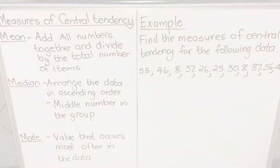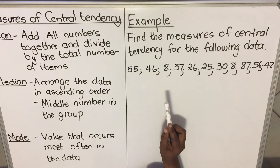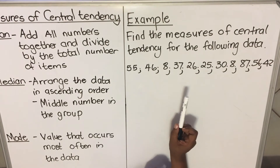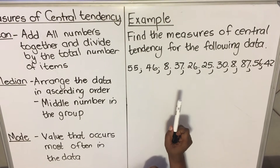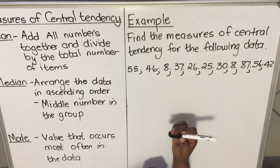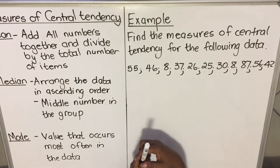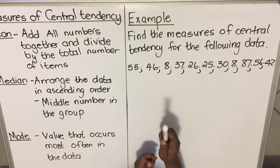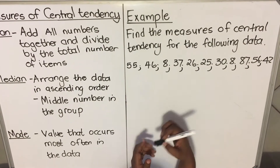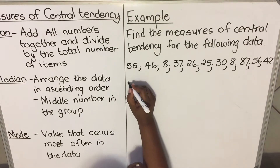Let's look at an example. They say find the measure of central tendency. If an example asks you that, they're asking you to find the mean, the median, and the mode. So we're going to start with the first one — the mean. For the mean, you don't necessarily have to arrange your data; you can just add it.